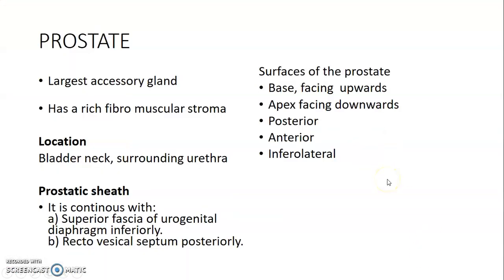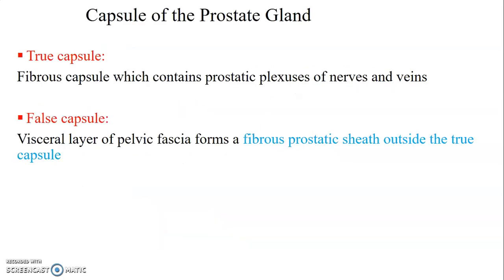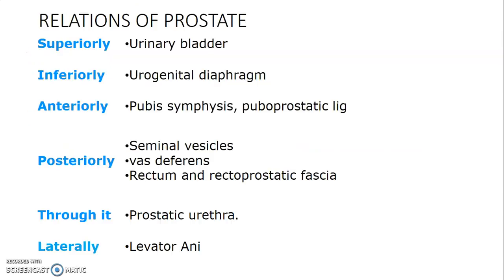I had done some introduction. It's the largest accessory gland, rich with fibromuscular stroma. It is located at the bladder neck and usually surrounds the prostatic urethra. We have the prostatic sheath that is continuous with the superior fascial urogenital diaphragm inferiorly and the rectovesical septum posteriorly. It has two capsules: the inner capsule is a true capsule that is fibrous and contains the prostatic plexus of nerves and veins, while the outer capsule is located external to the true capsule and is a fibrous prostatic sheath.